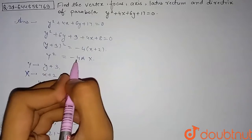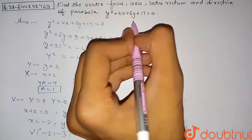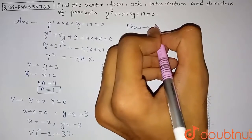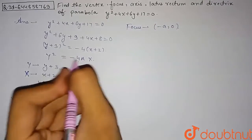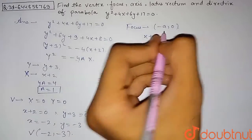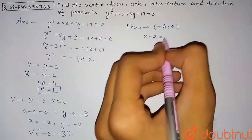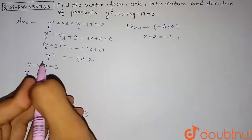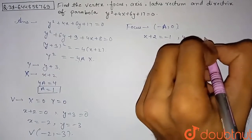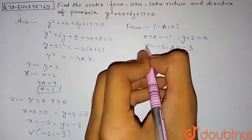Now we find the focus. For the general parabola y² = −4ax, the focus is at (−a, 0). Replacing x with (x + 2) and y with (y + 3): x + 2 = −a = −1 gives x = −3, and y + 3 = 0 gives y = −3. So the focus is (−3, −3).